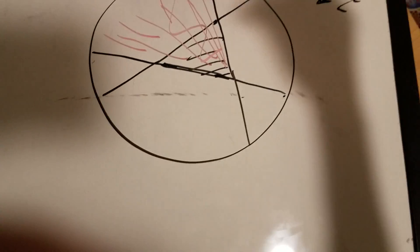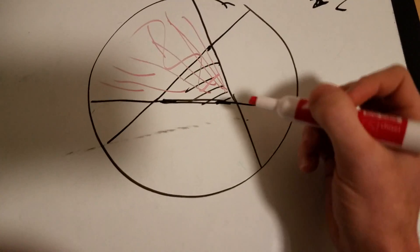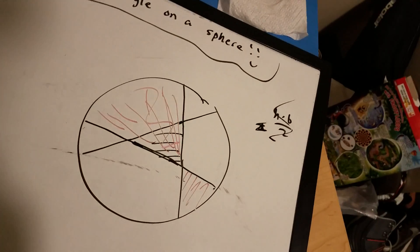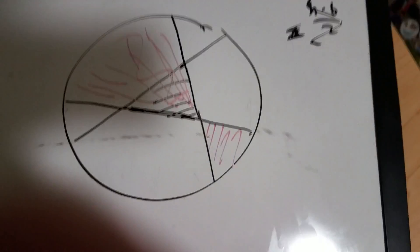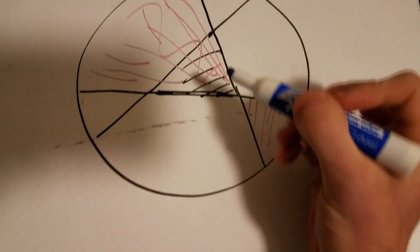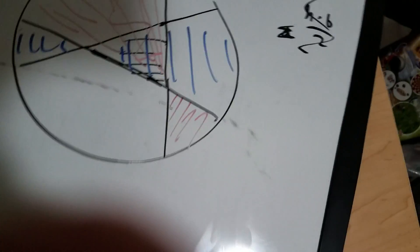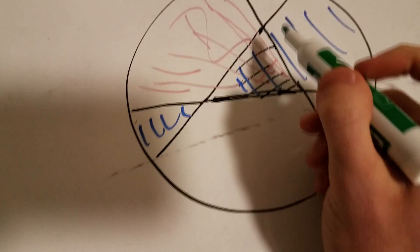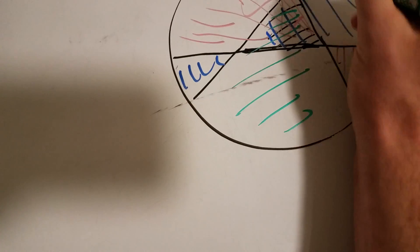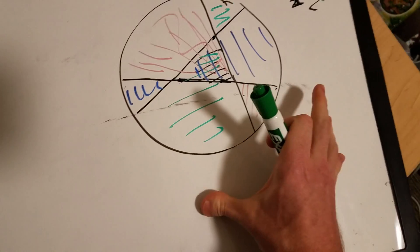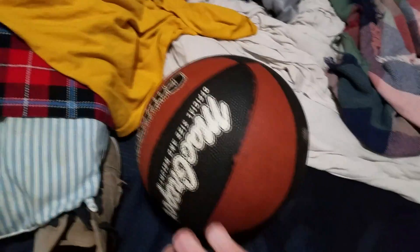So we're going to take the area of this lune right here, which curves all the way around, and also take the one opposite it on the other side of the sphere. Then we take the area of a second lune plus its opposite, and finally the area of a third lune and its opposite. So you have three lune pairs: each slice and its opposite side.